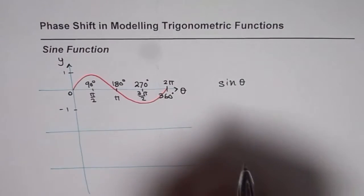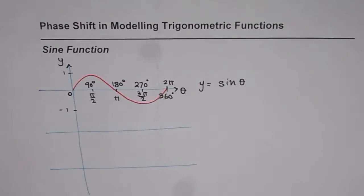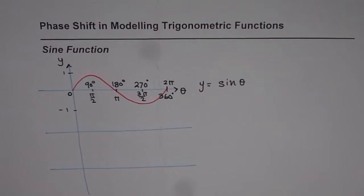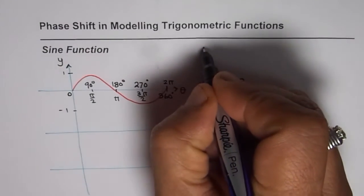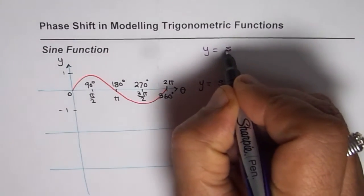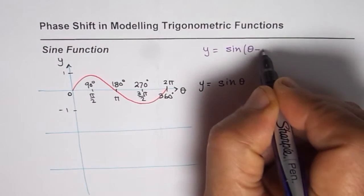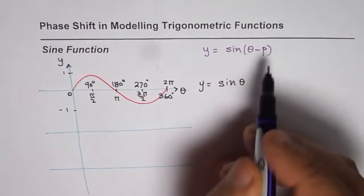Now when we are talking about phase shift, we are actually trying to write an equation in terms of y = sin(θ - P), so that is the phase shift which we are talking about. We are keeping the amplitude one for these examples.